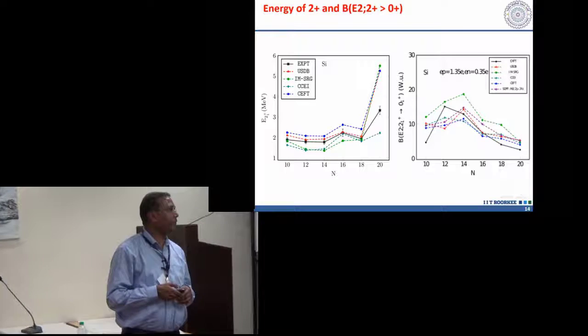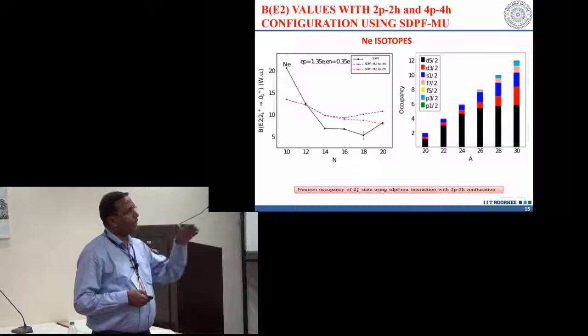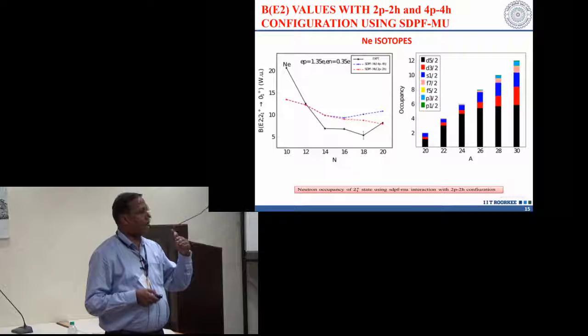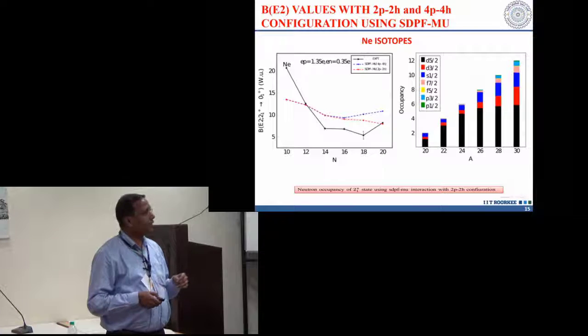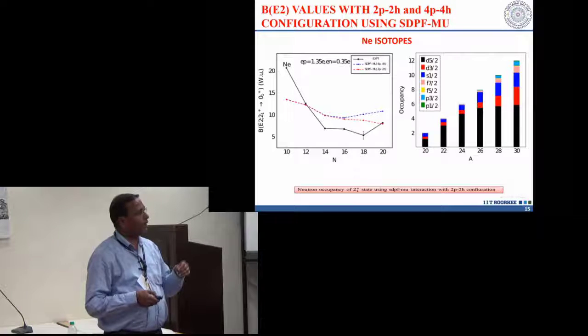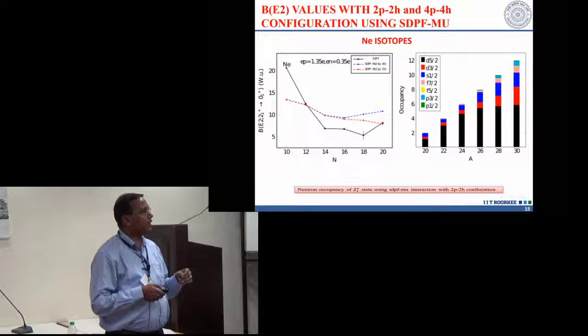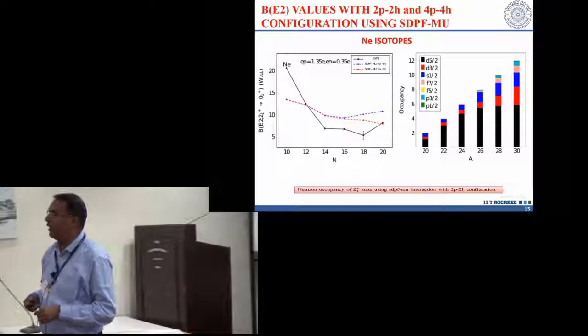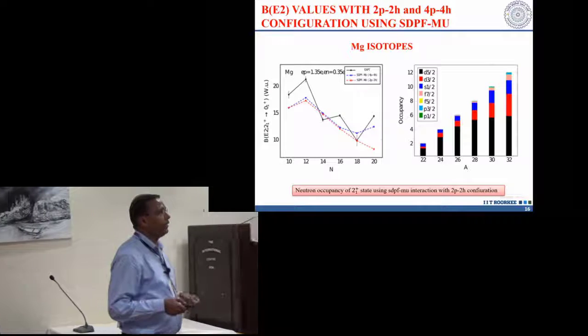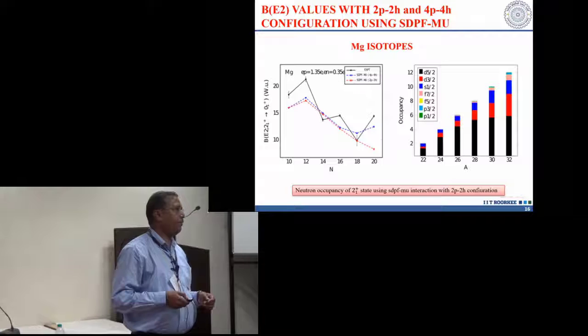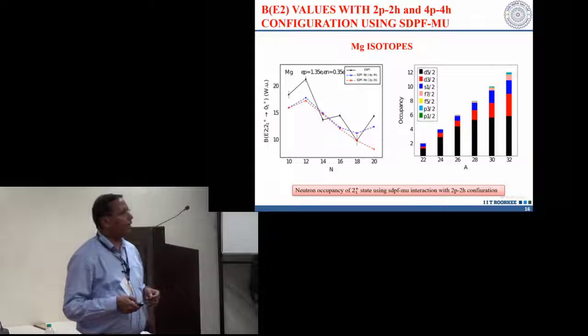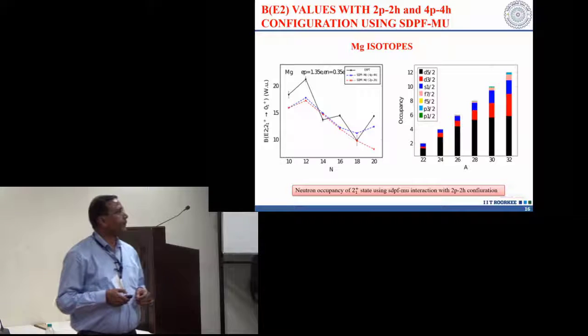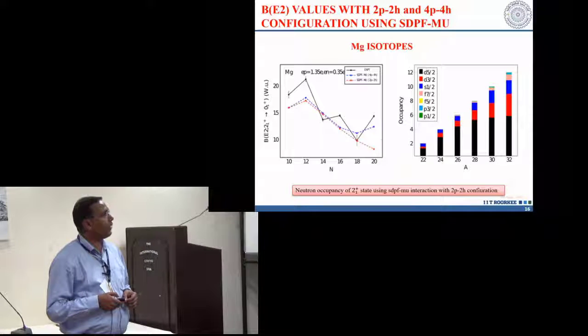We can also see how the occupancy is going, the occupancy we have for different orbitals. You can see here, once we have A equal to 30, these PF orbitals are very crucial to decide the structure of these nuclei. It means it is very obvious to include the PF shell once you go for heavier mass region, maybe around N equal to 20 region in the case of magnesium isotopes.